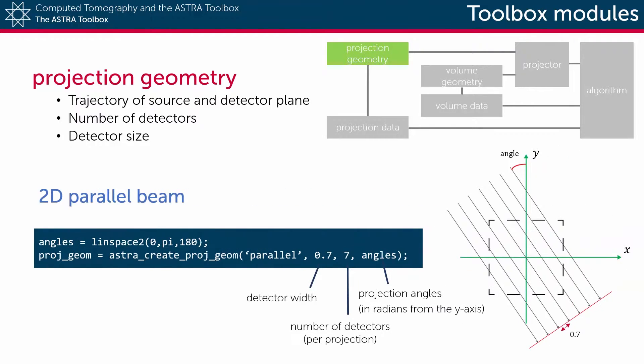In a two-dimensional parallel beam projection geometry, all x-rays of a single projection are parallel to each other. Such a geometry is created using the function astra_create_proj_geom with 'parallel' as its first argument.